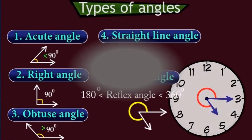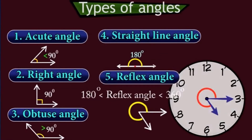Types of angles: an angle whose measure is exactly 90 degrees is called a right angle. An angle whose measure is less than 90 degrees is called an acute angle, and an angle whose measure is greater than 90 degrees is called an obtuse angle. When two right angles form a straight line, 90 plus 90 equals 180, so the measure of a straight angle is 180 degrees. A reflex angle is the angle whose measure is greater than 180 and less than 360 degrees, as shown clearly in this picture.